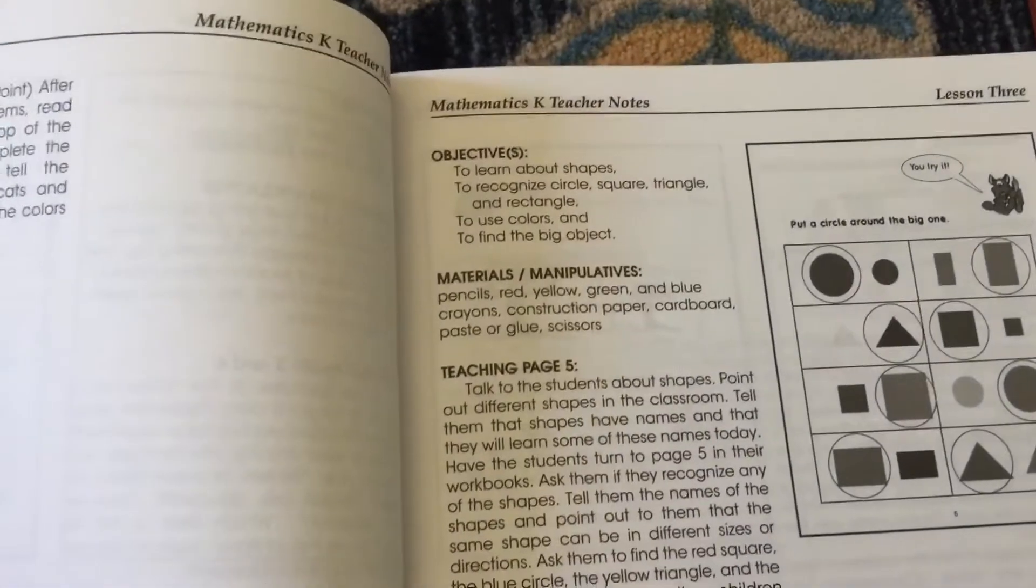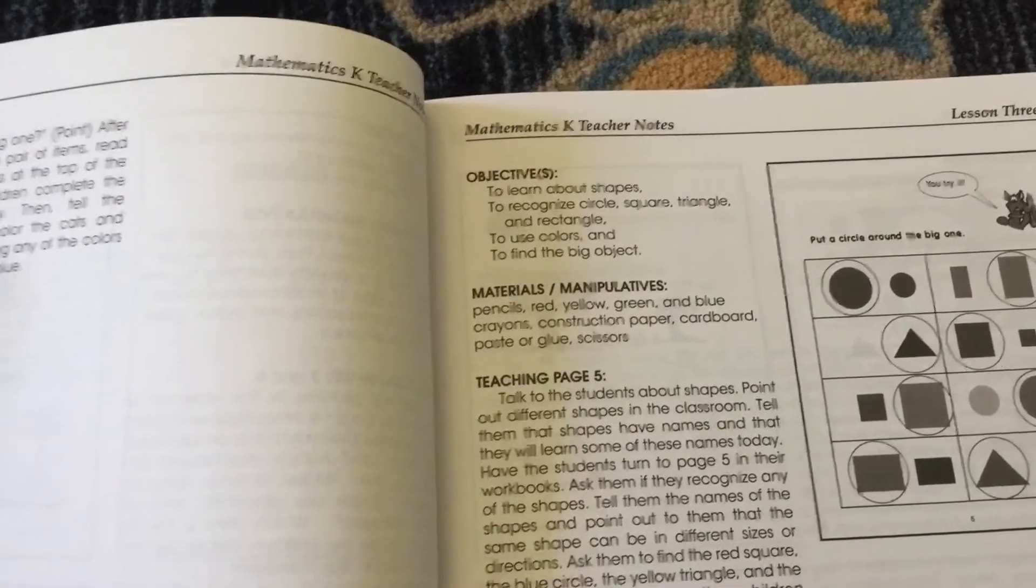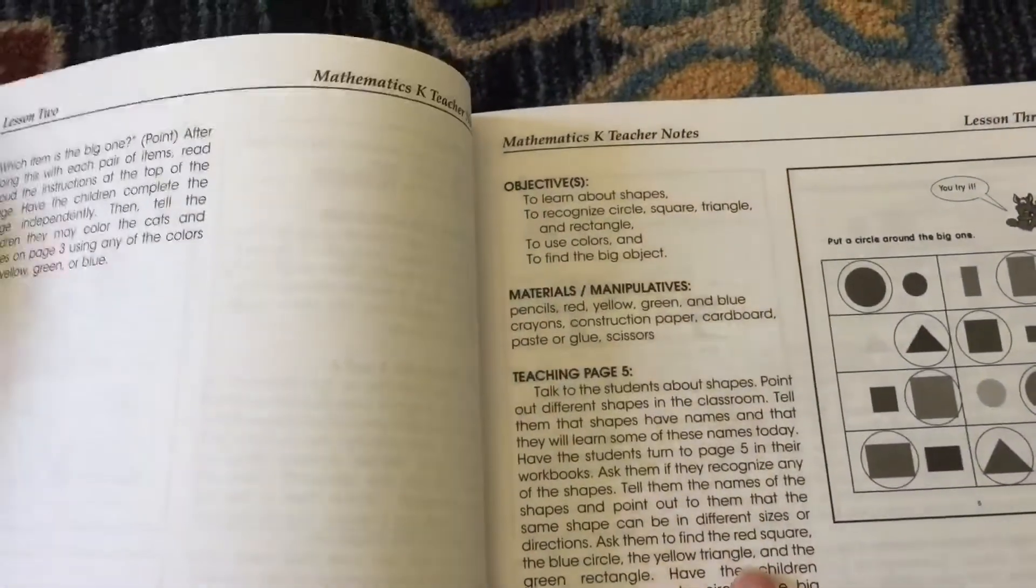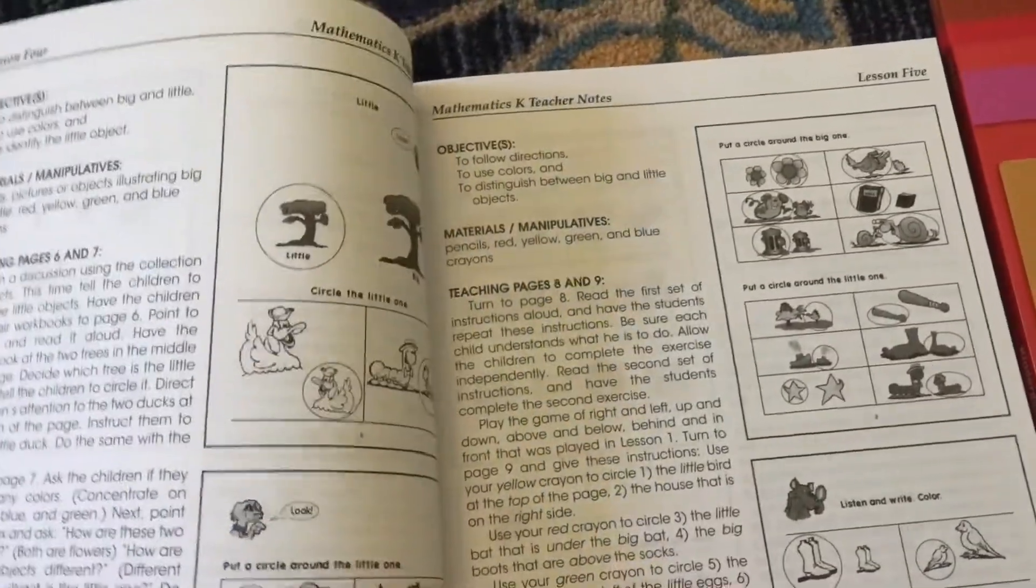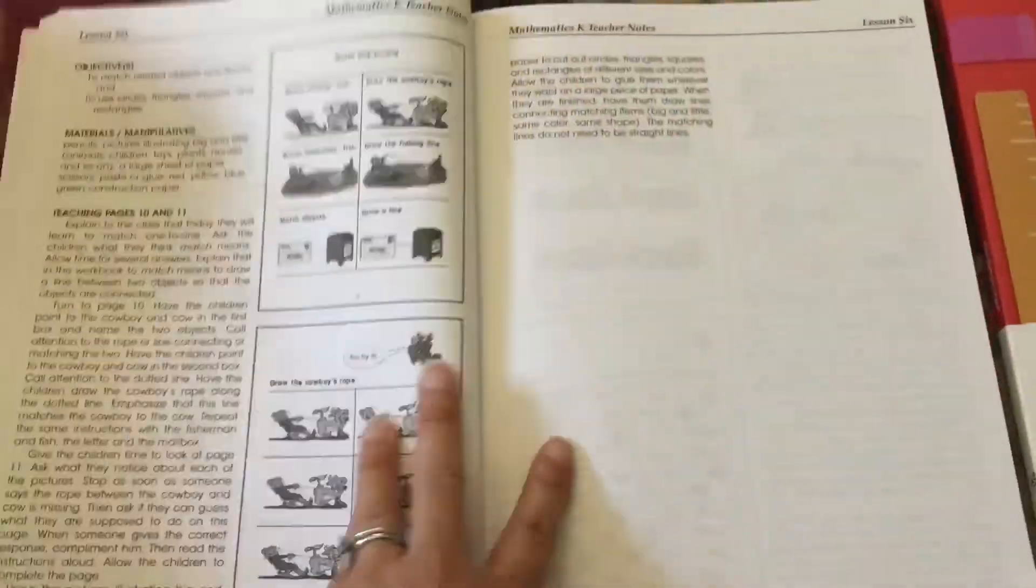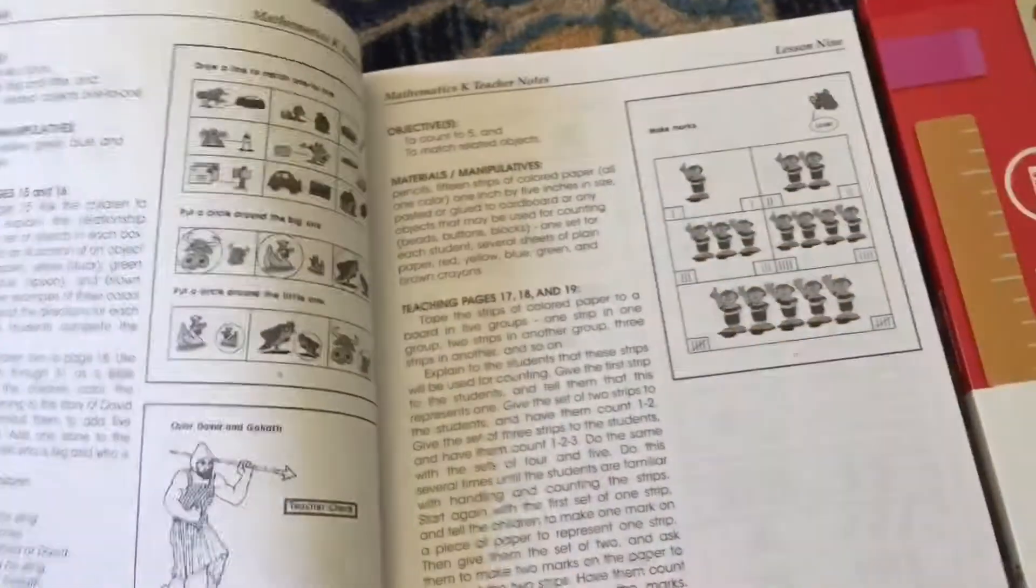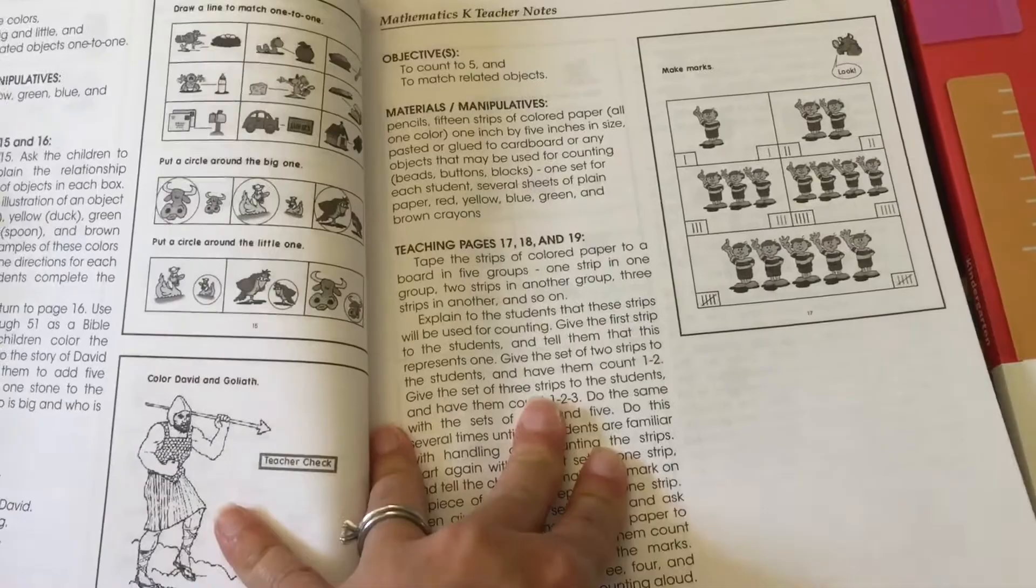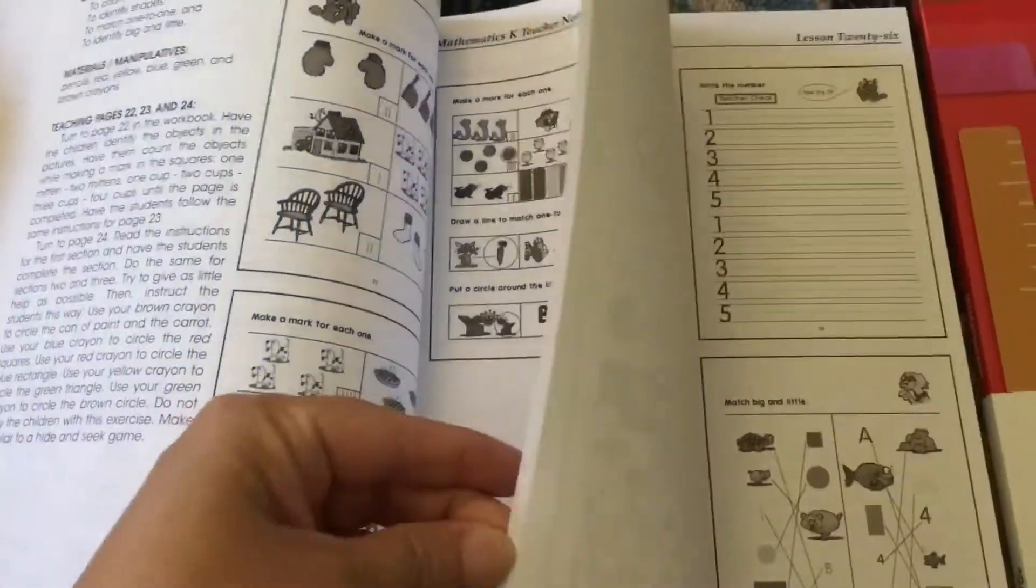It introduces new concepts pretty quickly but then it builds upon them in the lessons that come after. For example, this one is shapes: circle, square, triangle and rectangle, and then colors. It tells you colors but then it goes into specific colors and objects that are big, and then it'll introduce something new like directions, and it'll still be using the colors and shapes and then add something else that's new.